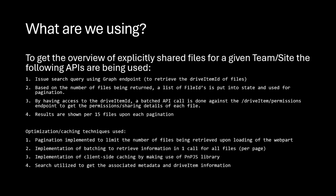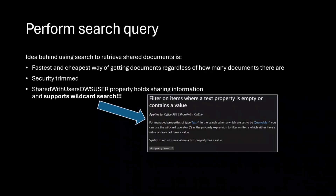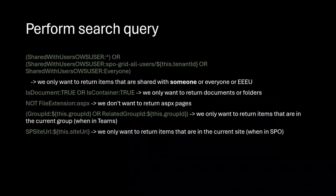Let's dive in, because perhaps most people don't know you can do this within search. The reason I'm using search is it doesn't really matter how many documents are in a team site or document library — it just works and it's quick. And it's security trimmed, so you only see items and documents you have permissions to. What also blew my mind is that you can now do a wildcard search for a single managed property just to see if something is in the property. So I make use of the SharedWithUsersOWSUser managed property with a wildcard — that basically gives back all documents that have been shared with a user or via a sharing link.